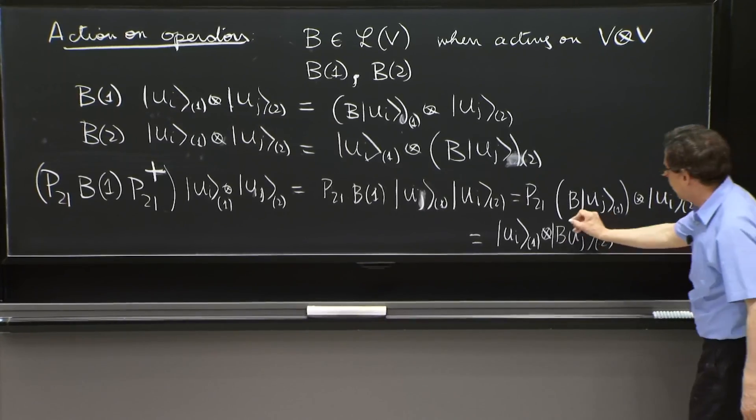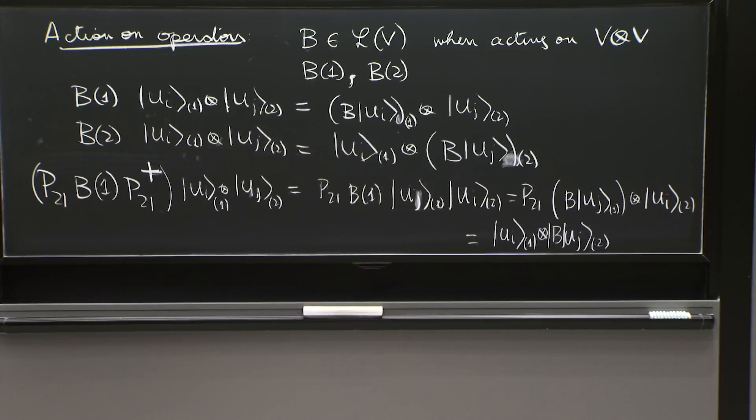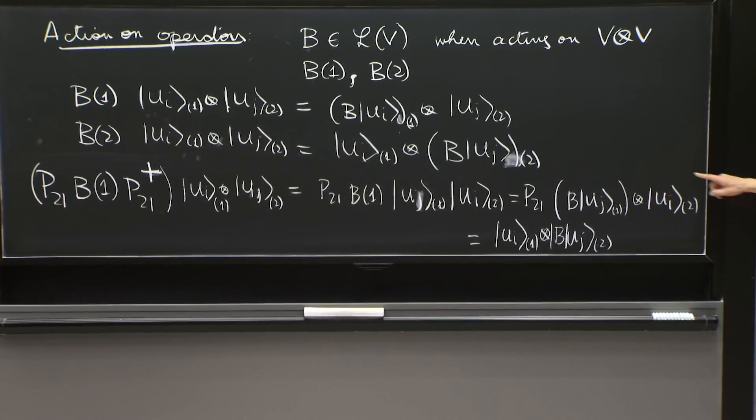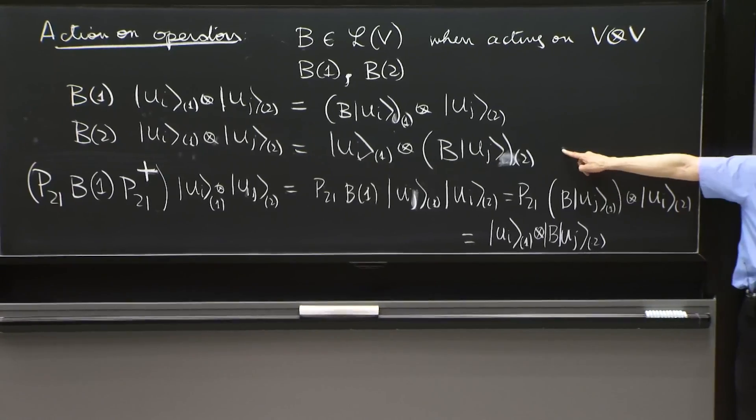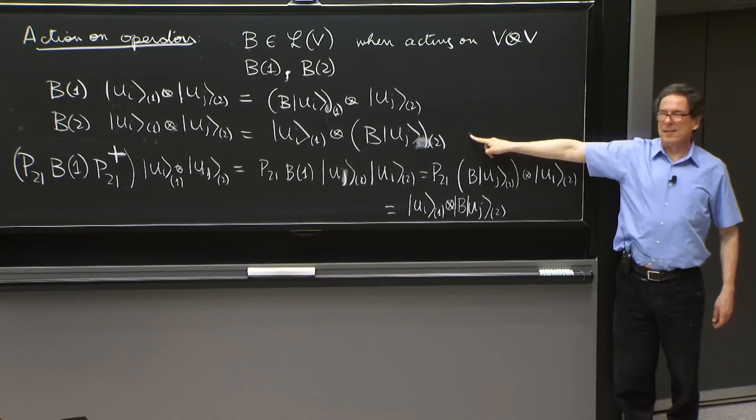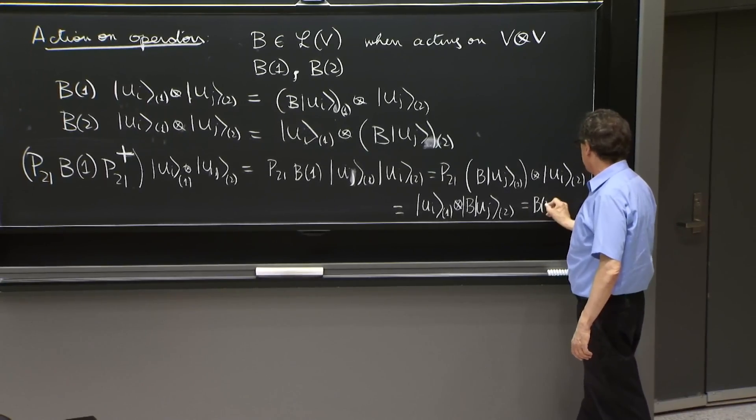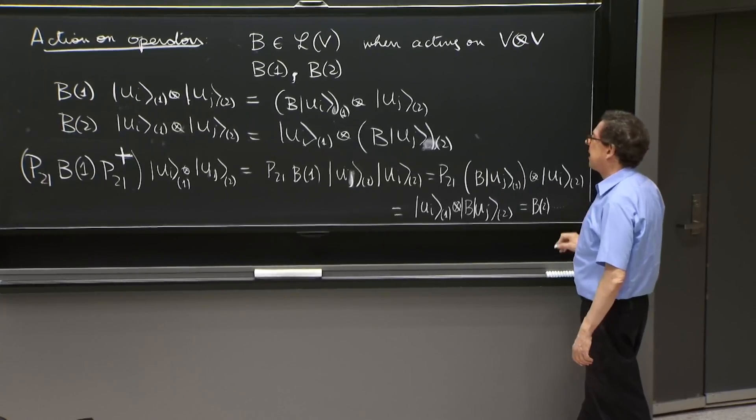I could put this thing, B, uj2. And then you see, this term is here.